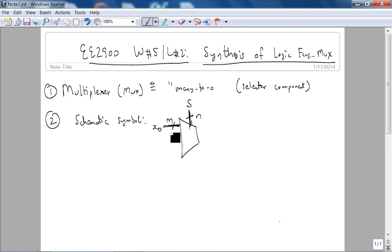So here is x0 all the way to x 2 to the n minus 1, m bits wide. And then you have your output y which is also n bits wide. So here is the schematic symbol for the MUX and the general relationship between the select bits, the number of inputs, and there's only one output.